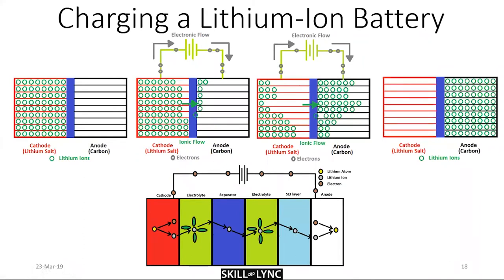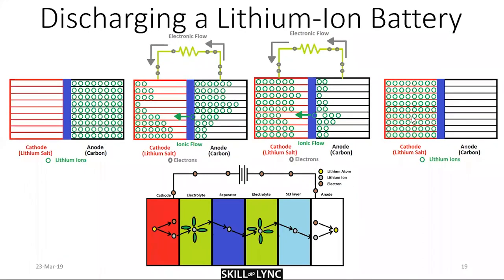The SEI layer is both a boon and a bane. Without it, carbon would start dissociating every time you use the cell. But the SEI layer increases ionic resistance and causes aging of the cell — so it saves the carbon for some time but degrades performance. Discharging a cell works pretty much the same way — it's just a reverse process. In the galvanic approach, the Gibbs free energy (delta G) for this reaction is negative because it is a spontaneous process. This is just a reversible process.